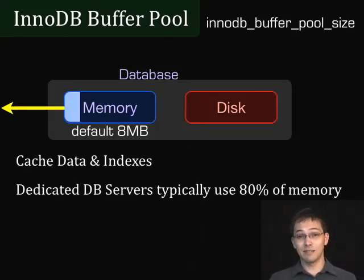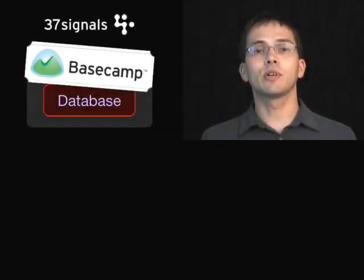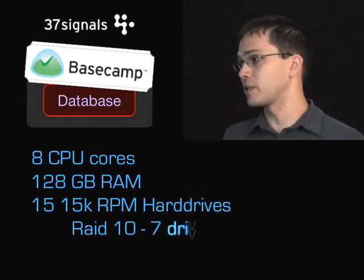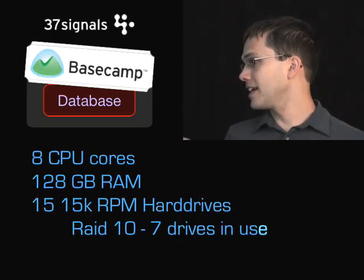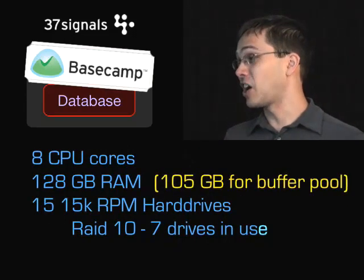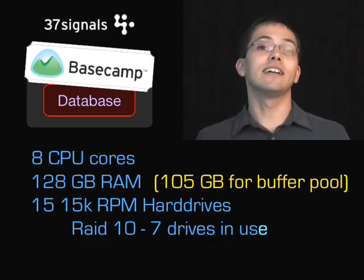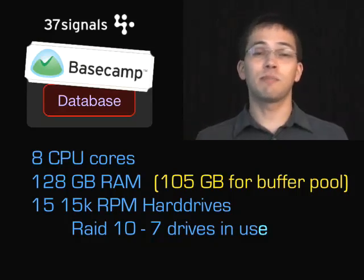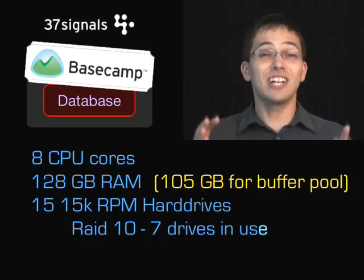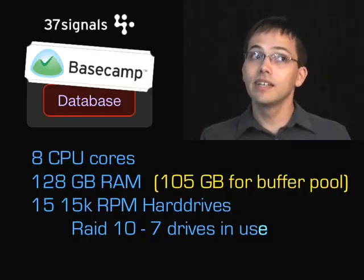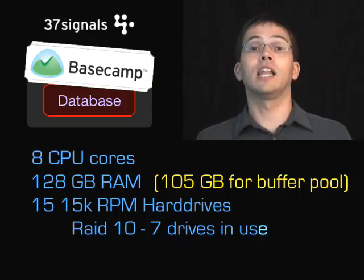Typically, if you've got a dedicated database box, what people usually do is dedicate 80% of RAM to just the database. In the last episode, we talked briefly about Basecamp's dedicated database box — the one with 8 CPU cores and 128 gigabytes of RAM. Out of that 128 gigabytes, they dedicate 105 gigabytes for this buffer pool. They're trying to get as much into memory as possible, maybe loading almost the entire database into memory, because if they don't have to touch the disk every time someone does a SQL query, things stay really fast and they get a lot of throughput.